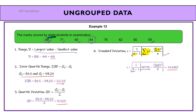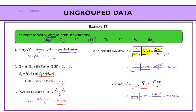To calculate the variance, substitute n and summation of x into the variance formula (s²). The variance from this data set equals 214.5714. Alternatively, you can calculate variance from the standard deviation value: 14.6483 squared gives the same result. That covers measures of dispersion for ungrouped data.